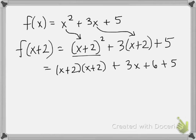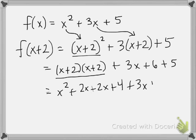So now what do I want to do? Well, since I have two parentheses multiplied together, I'm going to want to FOIL these parentheses. So I get x squared plus 2x plus 2x plus 4 and then I just continue to carry on my plus 3x plus 6 plus 5.